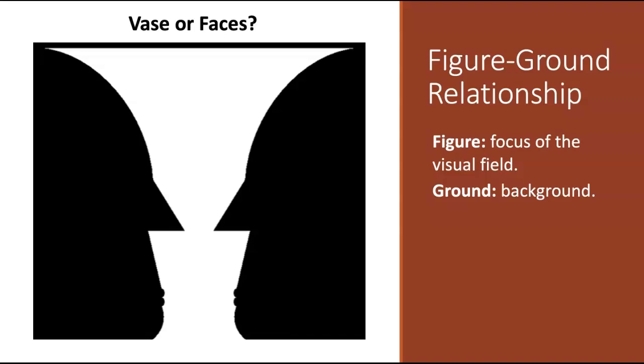So our perception can vary depending on what we view as figure and what we view as ground. And this explains why this image can be perceived as either a vase or a pair of faces. So if you view the white part here as the figure and the black part as the ground, then you are going to see a vase. If, however, you see the white part as the ground and the black part as the figure, then you are going to see two faces looking at each other.